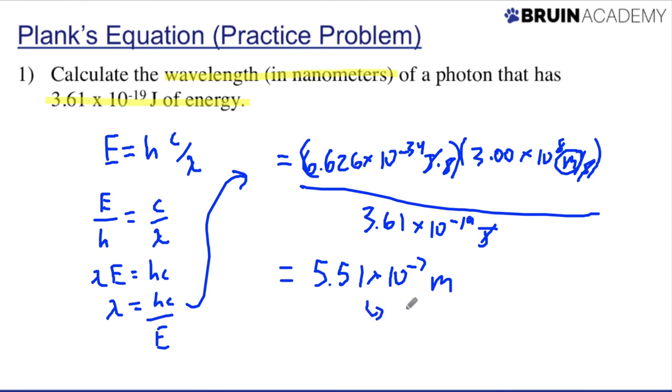This can also be written as 551 times 10 to the negative ninth meters. If you remember, nanometers corresponds to 10 to the negative 9. So instead of writing it in scientific notation, I can just write it much more simply as 551 nanometers. And so that's how you do these types of problems that involve Planck's equation.